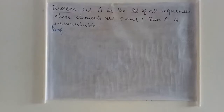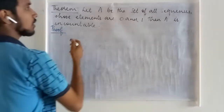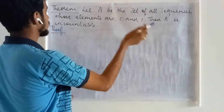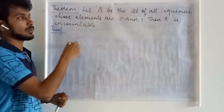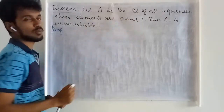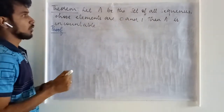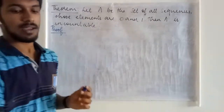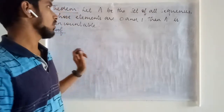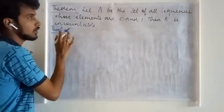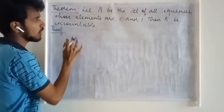The next theorem we are going to see is: we are given a set consisting of sequences whose entries are 0s and 1s. If we have a set of this kind, the set is uncountable — that is what we need to prove.